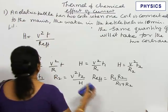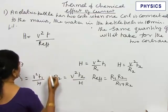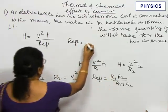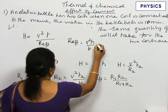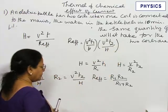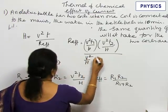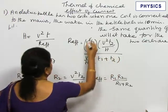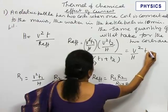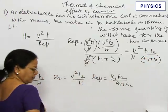Now, let us substitute for R effective. R effective first let us simplify. R effective is equal to R1 R2 by R1 plus R2. So V square T1 by H into V square T2 by H divided by R1 plus R2, that is V square by H times T1 plus T2. We can cancel one V square by H. So this becomes V square by H T1 T2 by T1 plus T2. This is simplification for R effective.